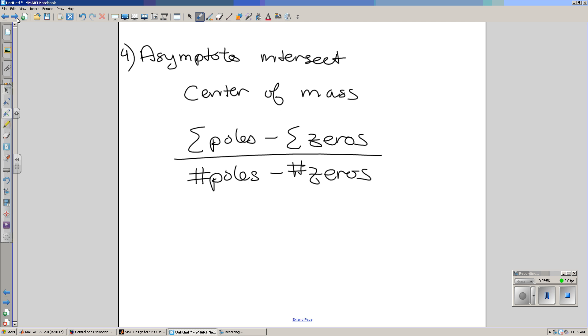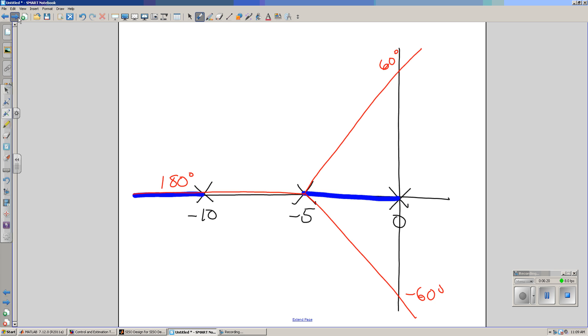The asymptote intersect. Where it's going to hit. Where you draw the asymptotes is the center of mass. Essentially, when you take off to infinity, I've got essentially three poles so close to each other, it doesn't really matter. The center of mass is where those asymptotes take off. At your plus 60 degrees, minus 60, and 180. And in this case, the center of mass is at minus 5.